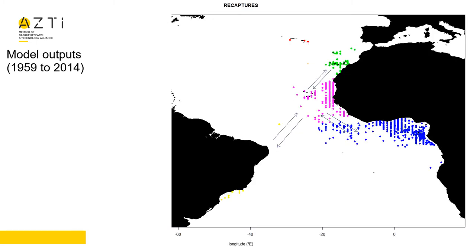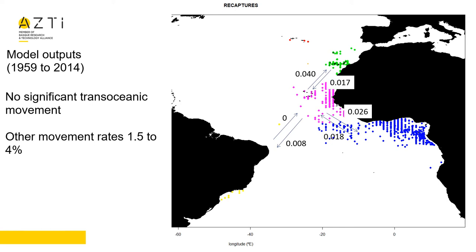So what does this model say? For the historical period, there is no significant trans-oceanic movement — it is zero from west to east and less than one percent from east to west. Other movement rates between regions in the eastern Atlantic range from 1.5 to 4 percent.